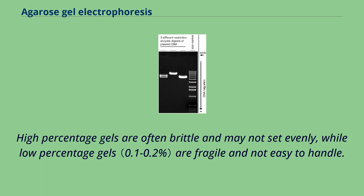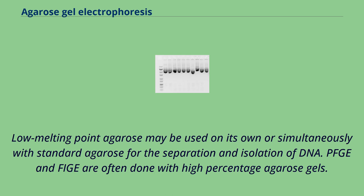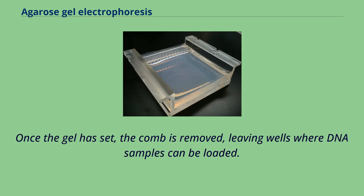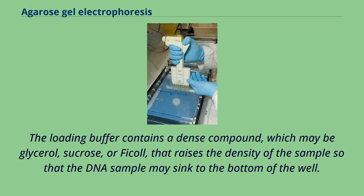Low melting point agarose may be used on its own or simultaneously with standard agarose for the separation and isolation of DNA. PFGE and phage work are often done with high percentage agarose gels. Once the gel has set, the comb is removed leaving wells where DNA samples can be loaded. Loading buffer is mixed with the DNA sample before the mixture is loaded into the wells. The loading buffer contains a dense compound — which may be glycerol, sucrose, or ficoll — that raises the density of the sample so the DNA sinks to the bottom of the well.